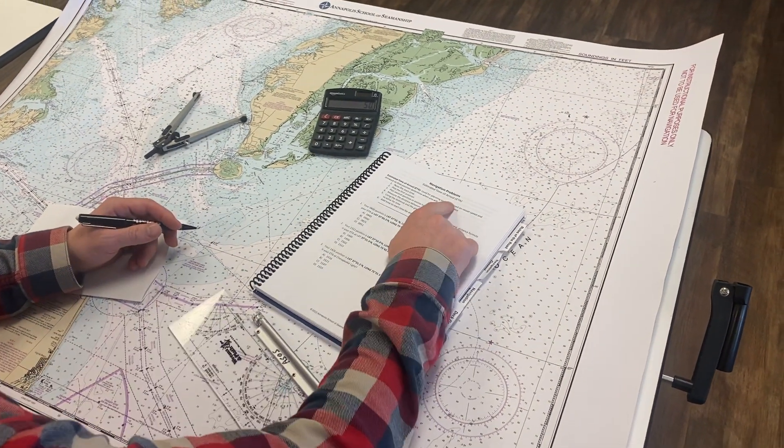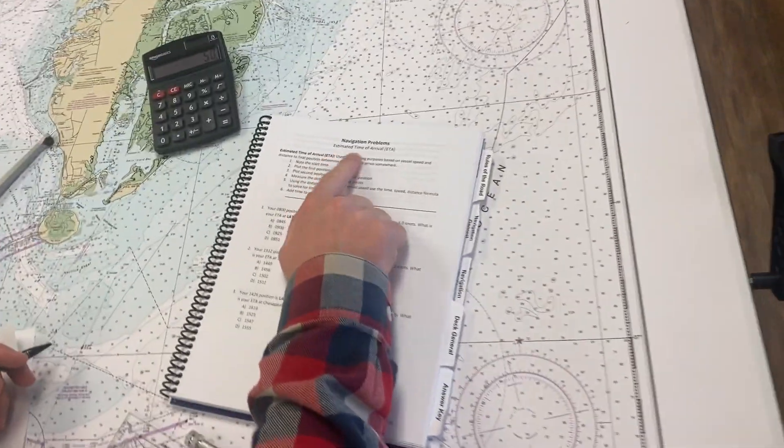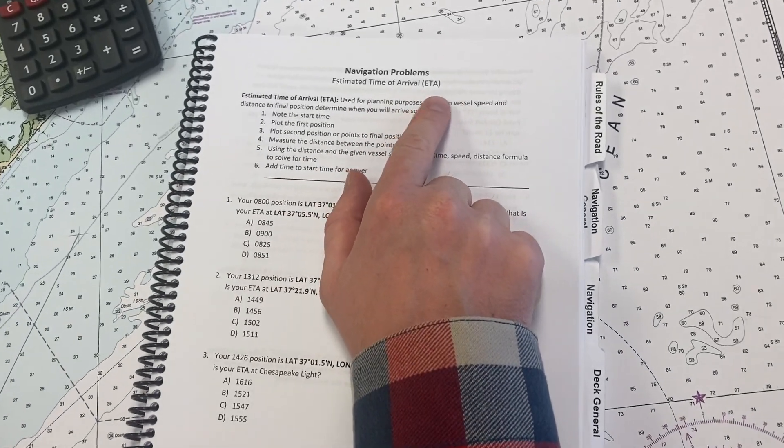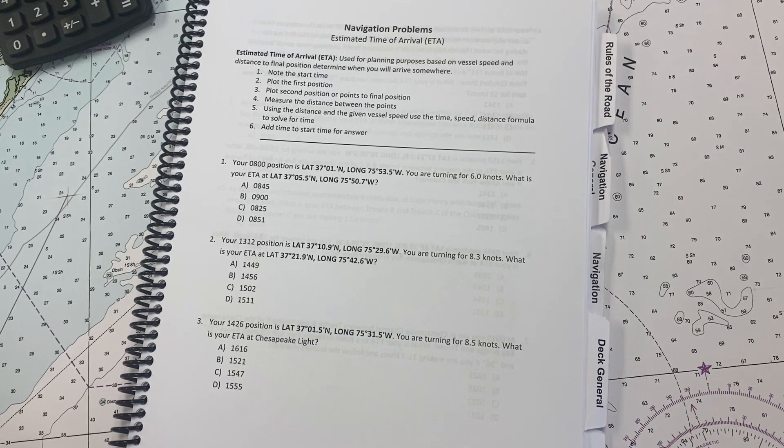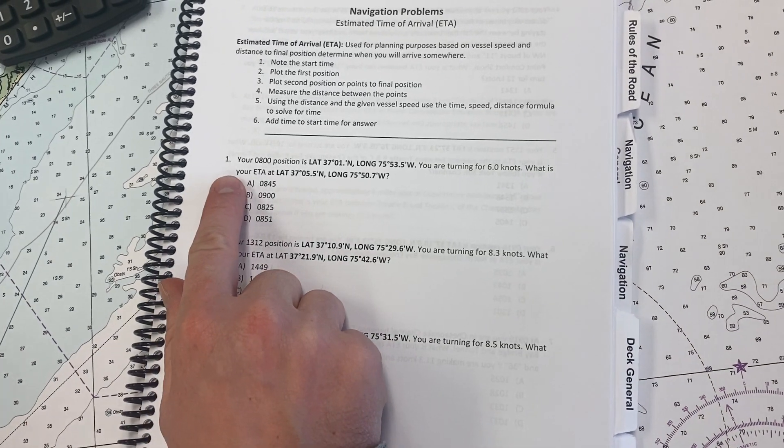Okay, here we are, navigation problems. We're working our estimated time of arrival, or our ETA. All right, so we're going to be doing a time and speed distance problem here. We're working question number one.